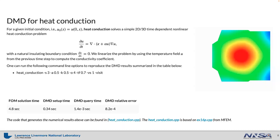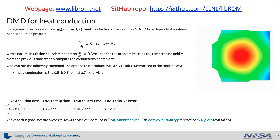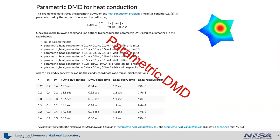We have implemented DMD in our C++ open-source library for reduced-order modeling, Librom. One example shown here is DMD for a heat conduction problem, which you can find on our Librom web page. The corresponding full-order model simulation takes 4.8 seconds, while the DMD query time takes only 1.4 times 10 to the negative 3 seconds, giving a speedup of around 3,000. The accuracy of DMD is pretty good, with a relative error of 8.2 times 10 to the negative 4. Note this is a reproductive case where DMD predicts the existing training data. We also have parametric DMD examples available in Librom, which we'll cover in the next tutorial video.